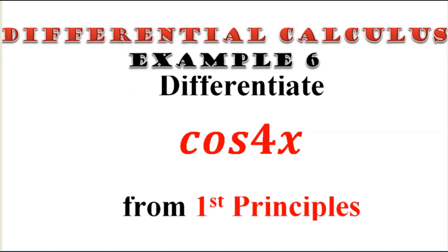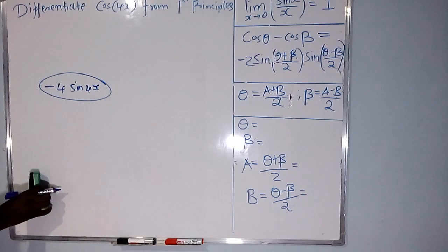Differentiate cos(4x) from first principles. If you differentiate cos(4x) from first principles, you will get negative 4 sin(4x). Now we want to see how negative 4 sin(4x) comes about.